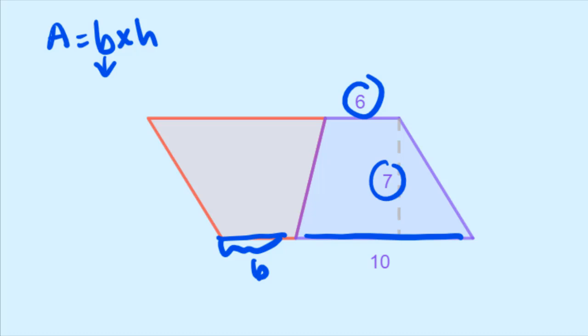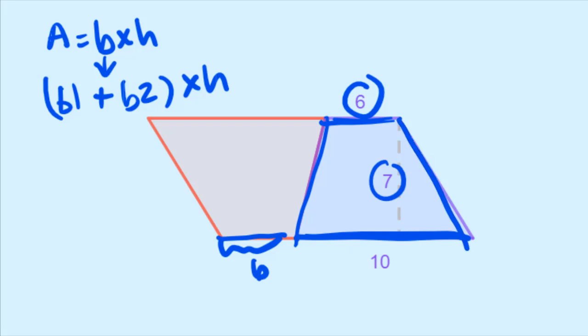So if I wanted to find the area of this parallelogram, I would have my base would be the base of one, this up here, plus the base of two, this one down here. And I have to multiply all of that by my height. And that would give me the area of this entire parallelogram.